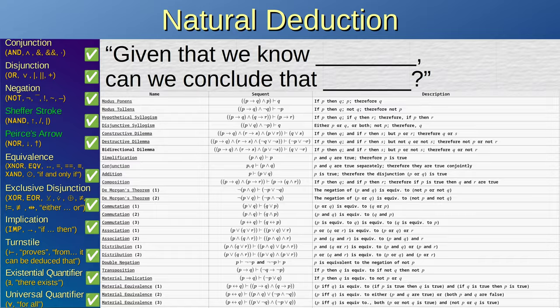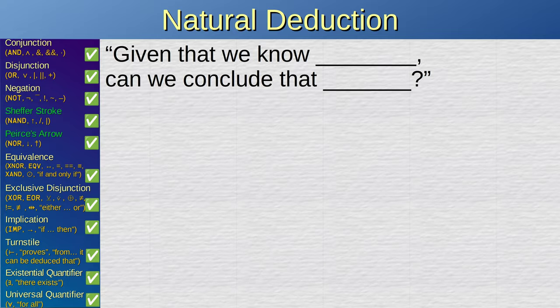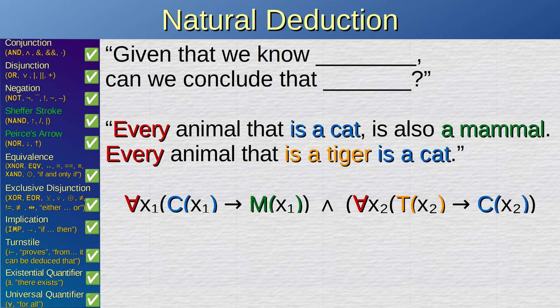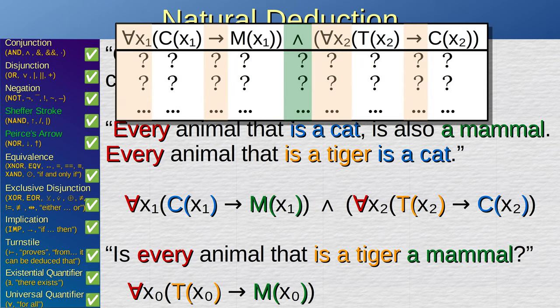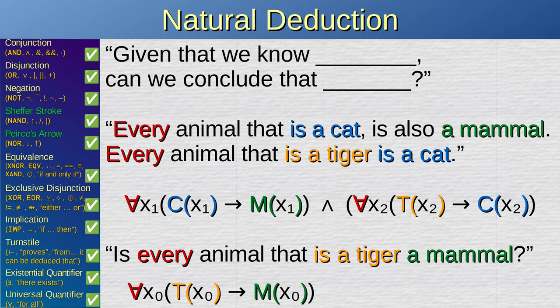However, once we step out from the realm of propositional logic into the realm of predicate logic, you might be unable to construct truth tables. For example, every cat is a mammal. Every tiger is a cat. Is every tiger a mammal? There is no way to make a truth table for this, because there is no truth table for the universal quantifier. We cannot enumerate all possible animals in our table, let alone all possible combinations of animals. There is a method of systematically proving that one statement is equivalent with another.